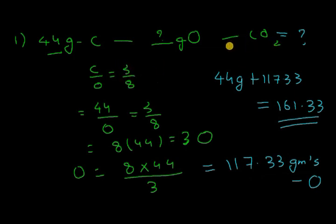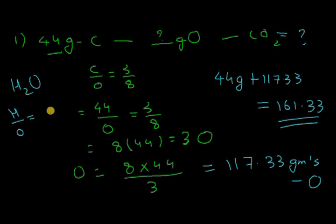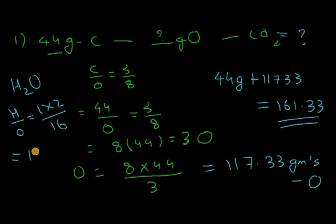Throughout the video we only discussed carbon dioxide, but the law applies to any compound. For example, in H2O: hydrogen has atomic mass 1 with 2 atoms, and oxygen has atomic mass 16 with 1 atom. So the ratio is (2 × 1) : (1 × 16) = 2:16 = 1:8. For every 1 gram of hydrogen you need 8 grams of oxygen.